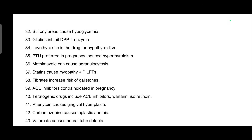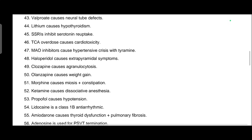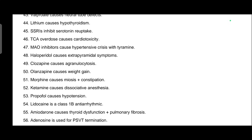Phenytoin causes gingival hyperplasia. Carbamazepine causes aplastic anemia. Valproate causes neural tube defects. Lithium causes hypothyroidism. SSRIs inhibit serotonin reuptake — full form: selective serotonin reuptake inhibitors. TCA overdose causes cardiotoxicity. MAO inhibitors cause hypertensive crisis with tyramine, so avoid tyramine-rich foods while taking MAOIs.